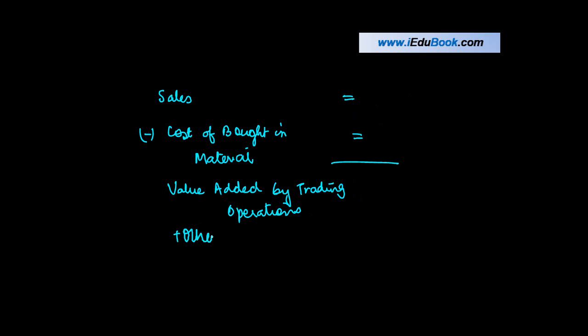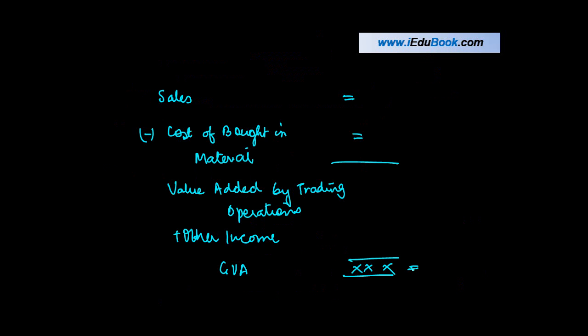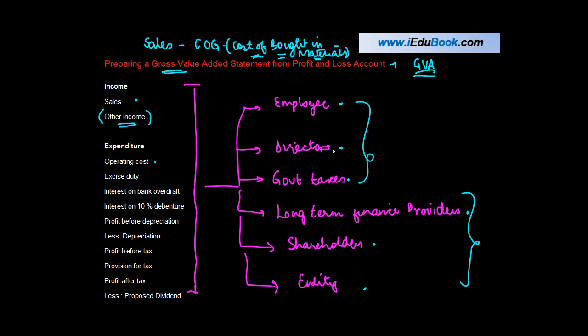To that, we add other income, and we get gross value added, or GVA as it's called. The reason why we exclude all these costs is, once we've got this gross value added, then we see how much of it goes to each of these stakeholders. And therefore, you cannot include that within this.